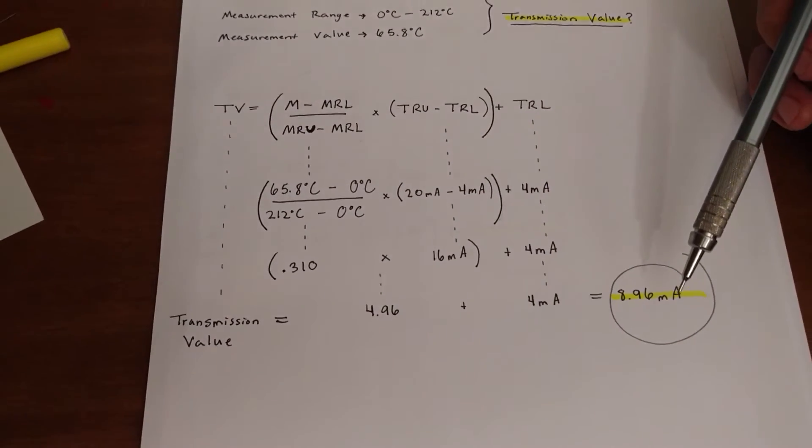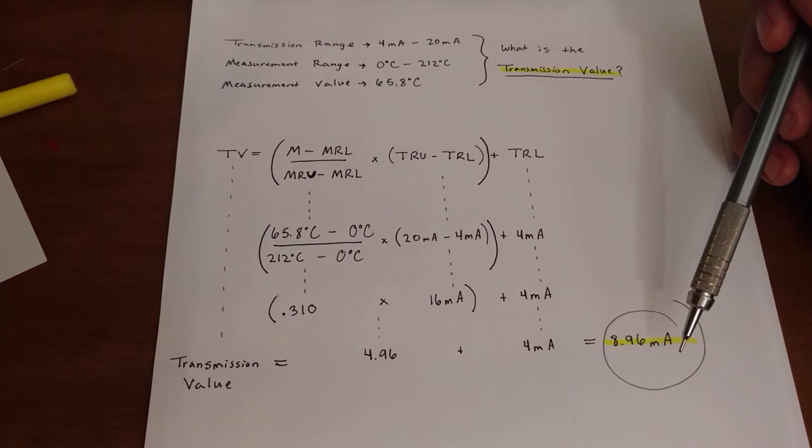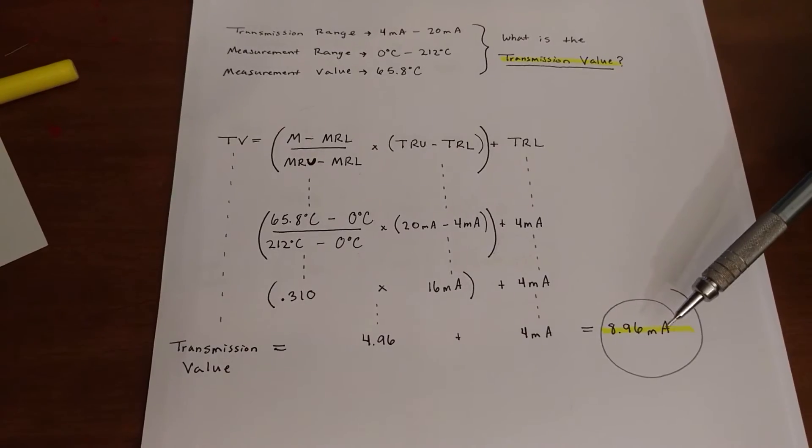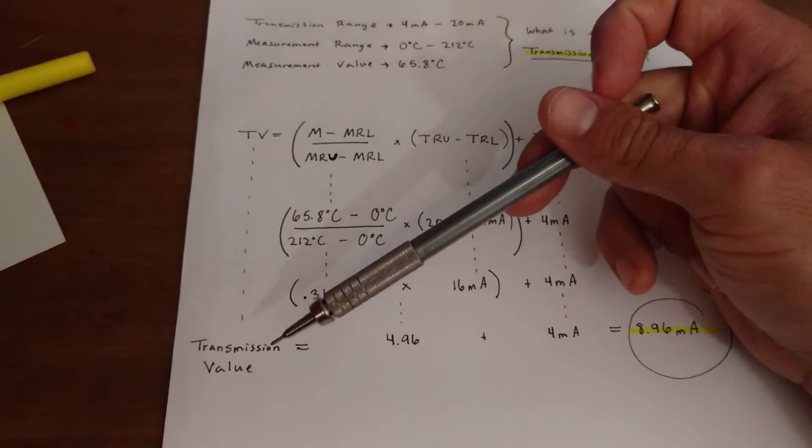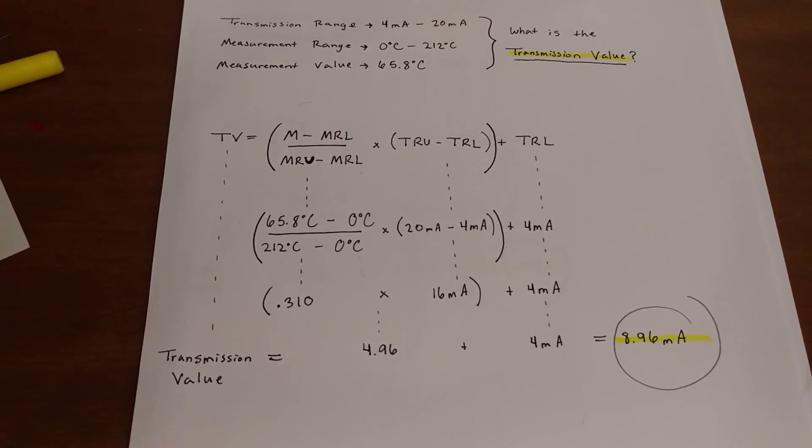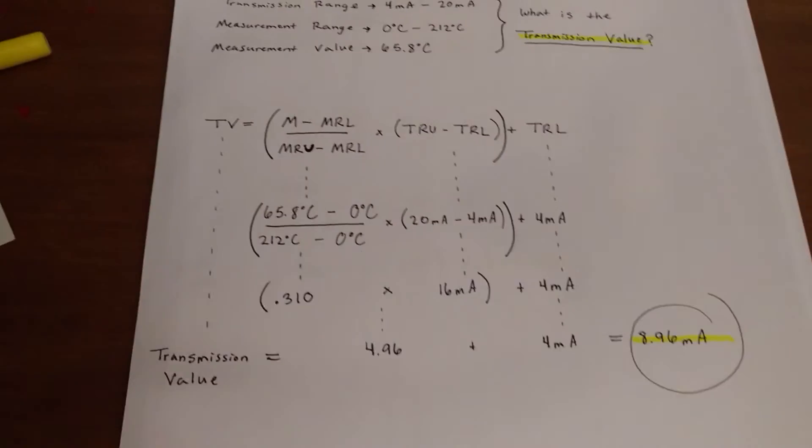So, you know, you're looking for milliamps in this case because your transmission range was in milliamps. So that's your 8.96 milliamps is your transmission value. I hope this was helpful. If you have any questions or comments, leave them in the links below, and have a good one. Thanks for watching.